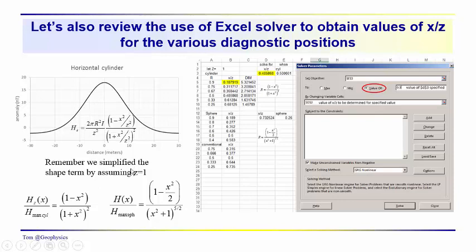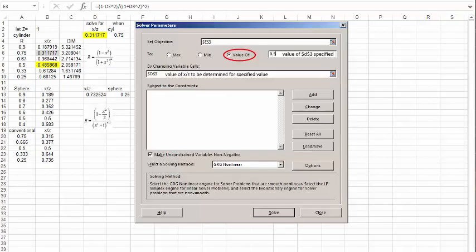Whatever it is that you're interested in as a diagnostic position. To simplify the approach, I eliminated the z by assuming that it's equal to 1. I did this for both the cylinder and the sphere. Using solver, we were easily able to calculate what is kind of a messy algebraic problem here.